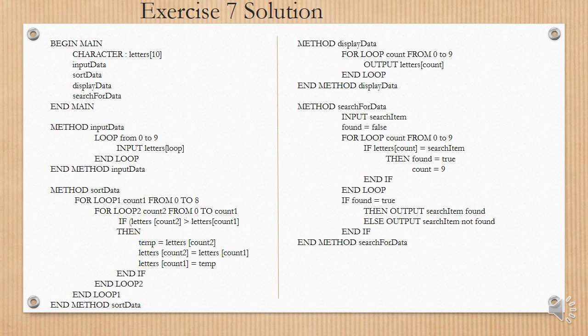Exercise 7 solution. Begin main. We declare the array character, colon, letters 10, and then we call the four methods here. The method input data loops from 0 to 9, and we input all of the 10 characters, which must go into the array.